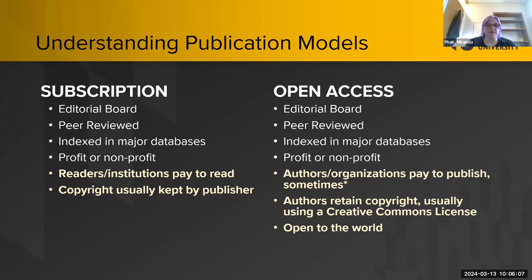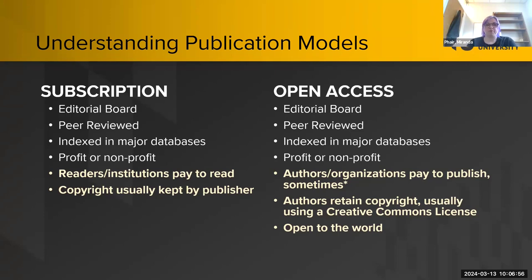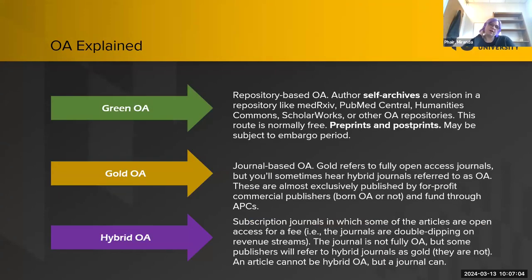The big differences have to do with who's paying and what the copyright rules are. In subscription journals, institutions pay for read access and copyright is usually kept by the publisher — though in many cases you can cross that out of your author agreement. In open access journals, authors or organizations sometimes pay to publish, and authors typically retain their copyright using a Creative Commons license. The journal might stipulate which license you use, and the content is open for everyone to read.